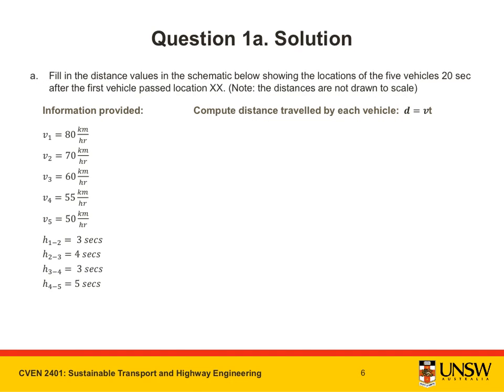Let's now compute the distance travelled by each vehicle after 20 seconds has passed using D, the distance, equals V, the speed, multiplied by T, time.